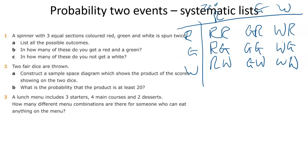So green, red, green, green, green, white, white, red, white, green, white, white. OK, so it's like a little table called a sample space diagram.